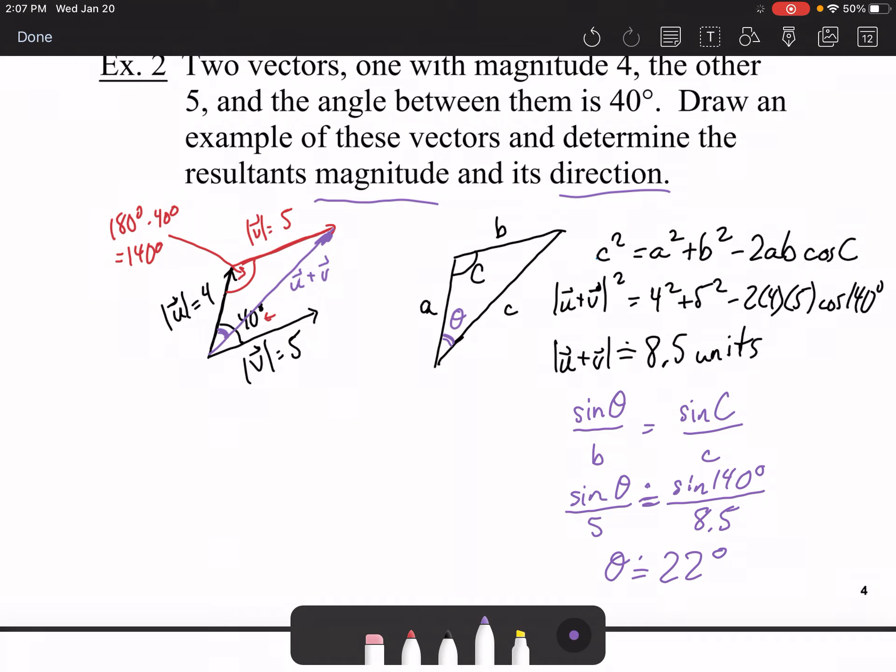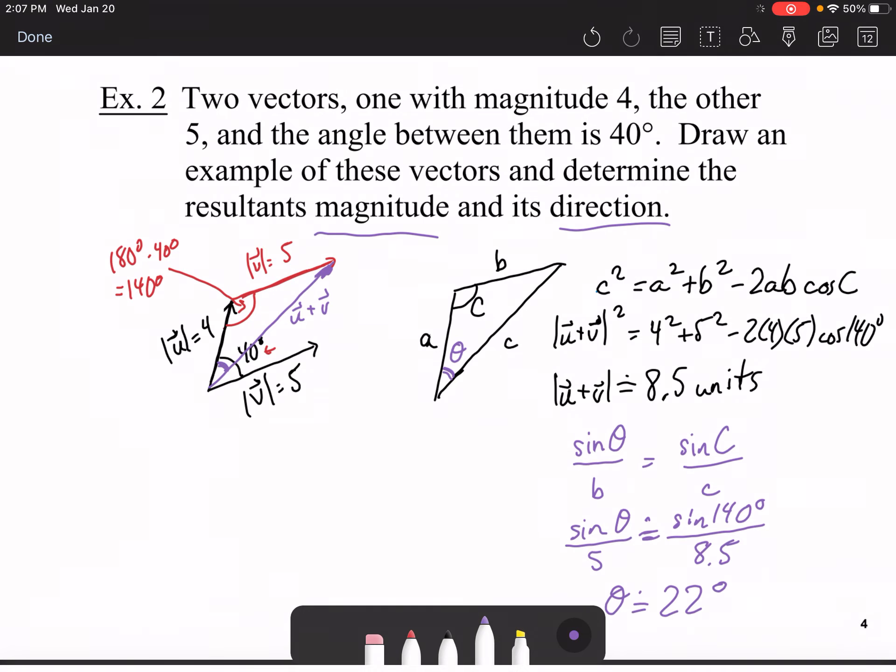And I get approximately 22 degrees. What that means is that angle at the base is 22 degrees from the 4. Let's write our concluding statement. Therefore the resultant has magnitude 8.5 units and is 22 degrees from 4 vector. If you said it was from the 5 vector obviously it would have been 18 degrees because 40 minus 22 is 18. And here we go that's how you find magnitude and direction.